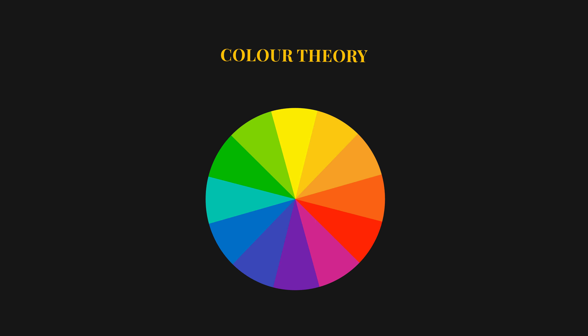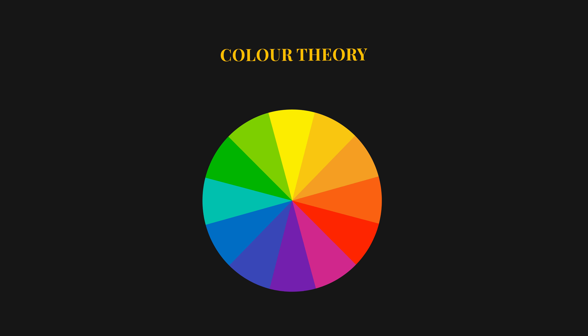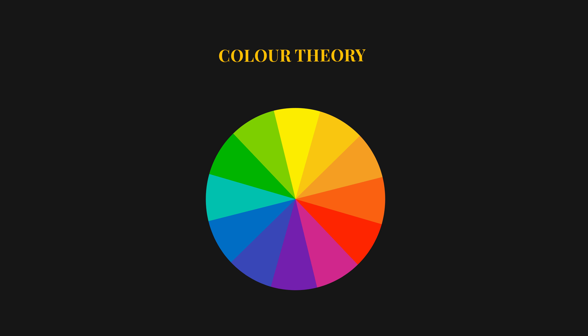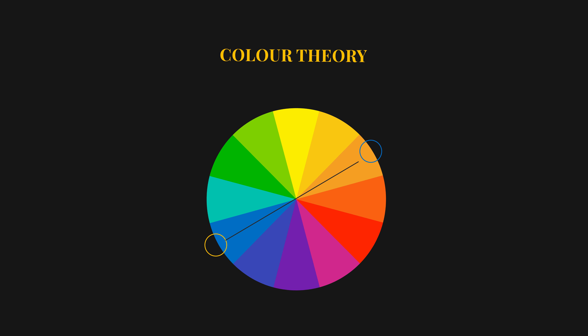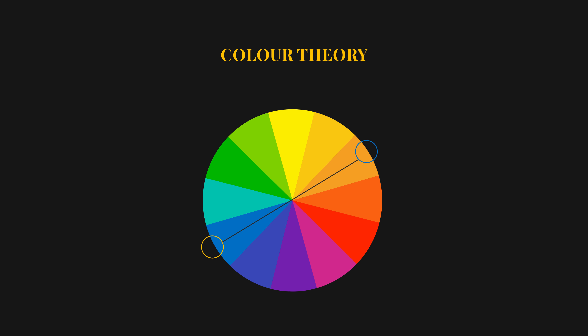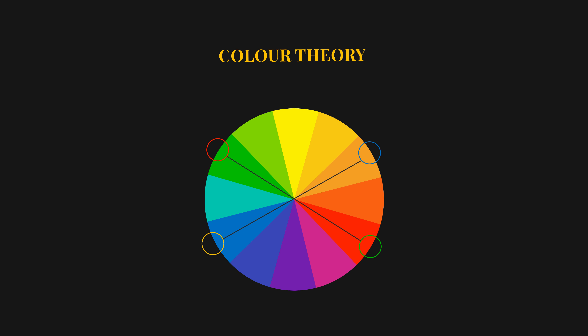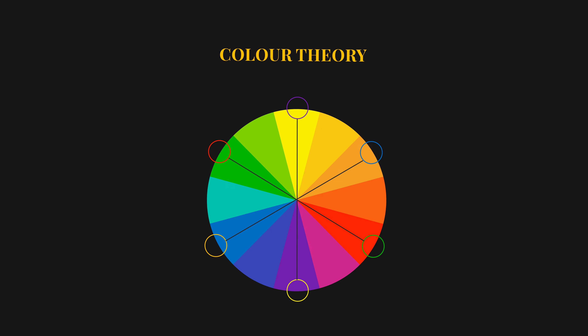One essential concept is complementary colors — those positioned opposite each other on the color wheel. For instance, blue and orange, red and green, yellow and purple. Now, how does the color pointer tool actually work? Let me show you some examples before we dive into some photos.